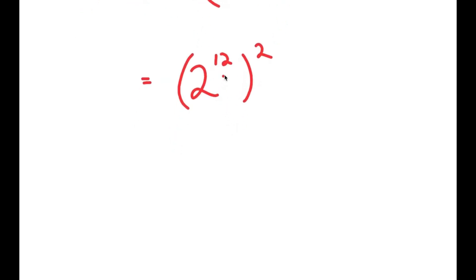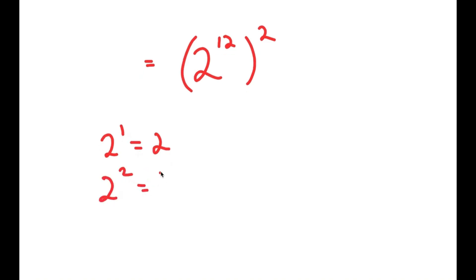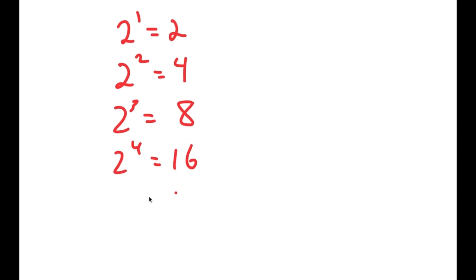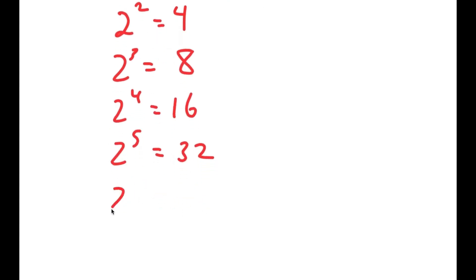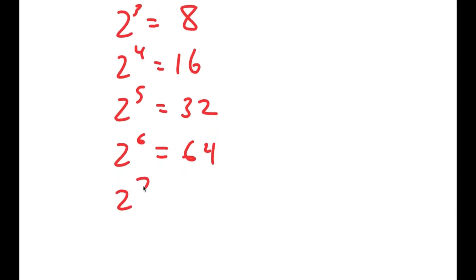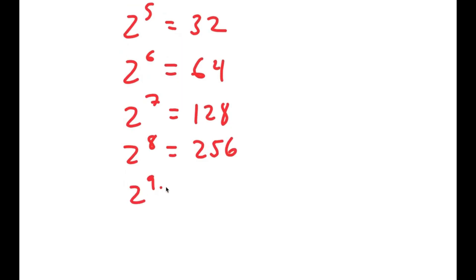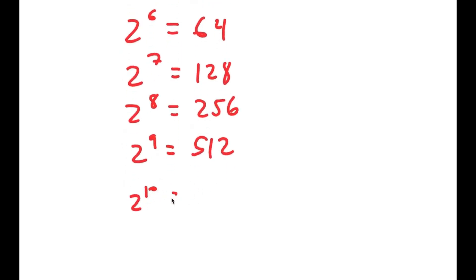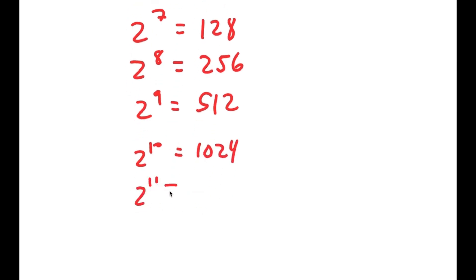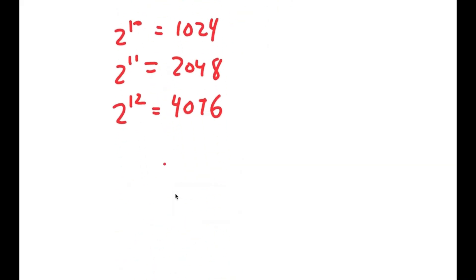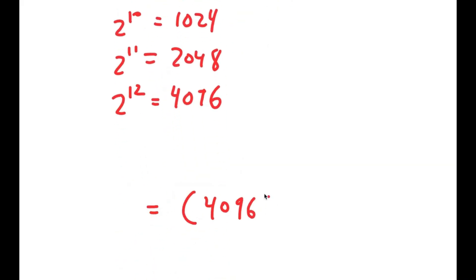Now I need to compute 2 to the power of 12. Starting from 2 to the power of 1 equals 2, each successive power doubles: 4, 8, and so on. I keep doubling until I reach 2 to the power of 12, which equals 4096. So this is my value for 2 to the power of 12, and I now have 4096 squared.